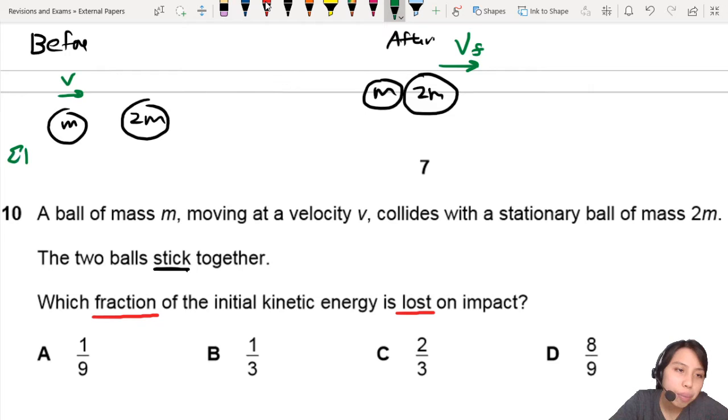So the total kinetic energy before collision is half MV squared. That's it. So only one ball is moving, so that is the contributor to kinetic energy.